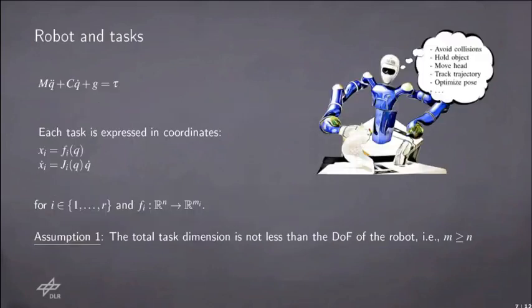To be a bit more formal, given the robot dynamics, we will have R tasks xi with their derivatives xi dot. The tasks are also ordered according to the priority, so the task x1 will be the one with the highest priority. Each of them will have a certain dimension mi, and the total task dimension given by the sum of all these mi's is assumed to be bigger or equal than the number of degrees of freedom of the robot.